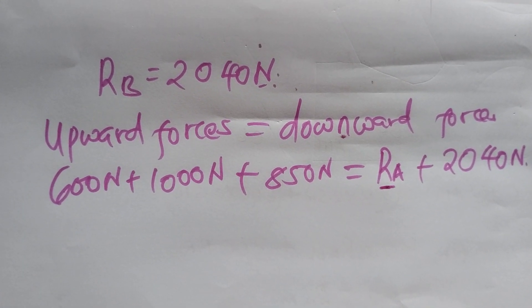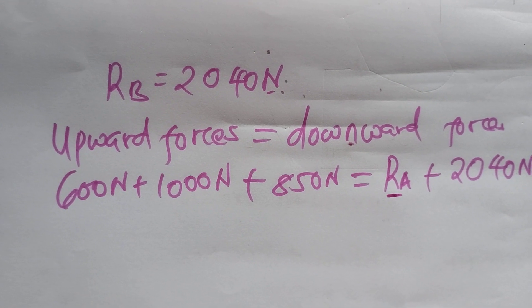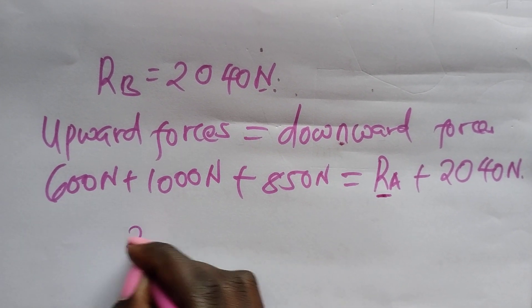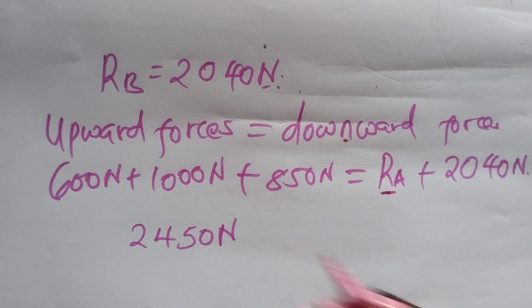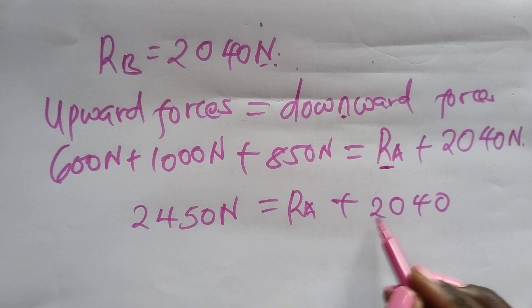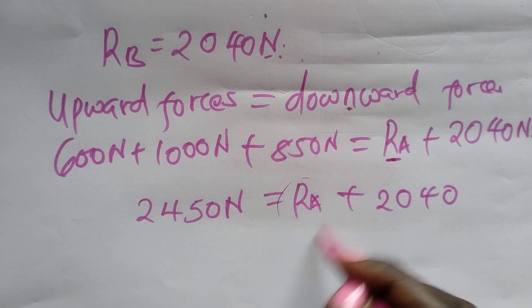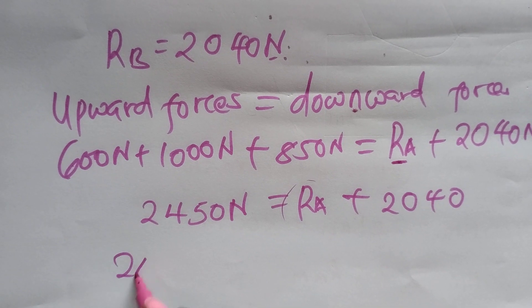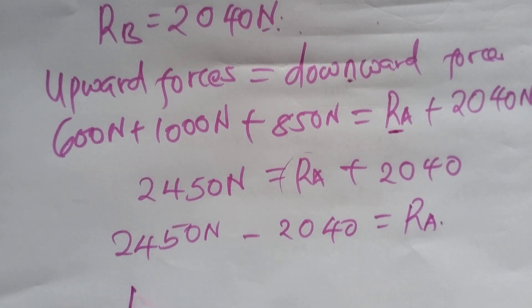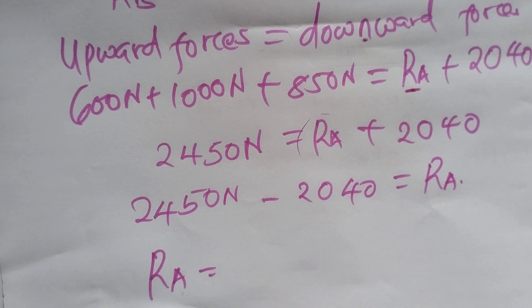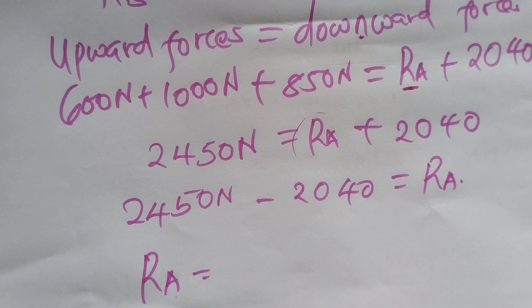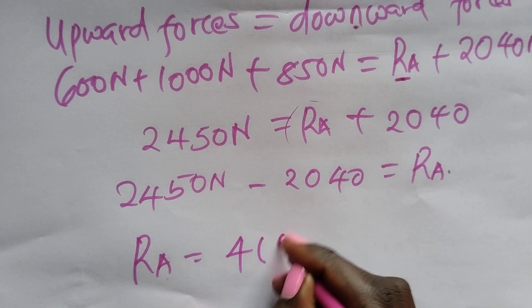So summation of all this with your calculator, you can just get that so fast and so swift. So this is 2450 newtons for the downward forces would be equal to RA plus 2040. So this is addition, so we will take it on the other end so we can have RA on the right hand side. So this would be 2450 newtons minus 2040 to give us our reaction A. So simply our RA would now be 410 newtons.